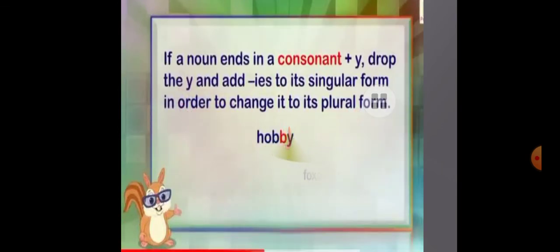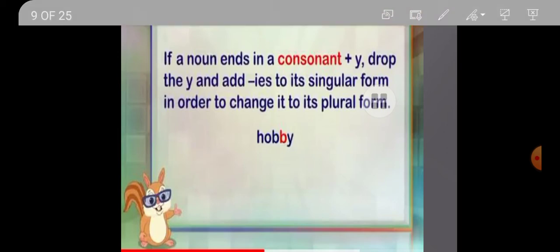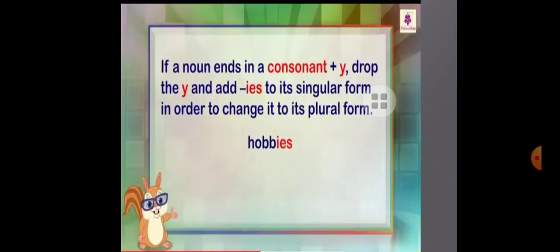The next rule is: if a noun ends in a consonant plus -y, drop the -y and add -ies to form the plural. So if the consonant comes before -y, we remove the -y and add -ies. For example, hobby — before -y the consonant is there, so we remove -y and add -ies to get hobbies, spelled h-o-b-b-i-e-s.